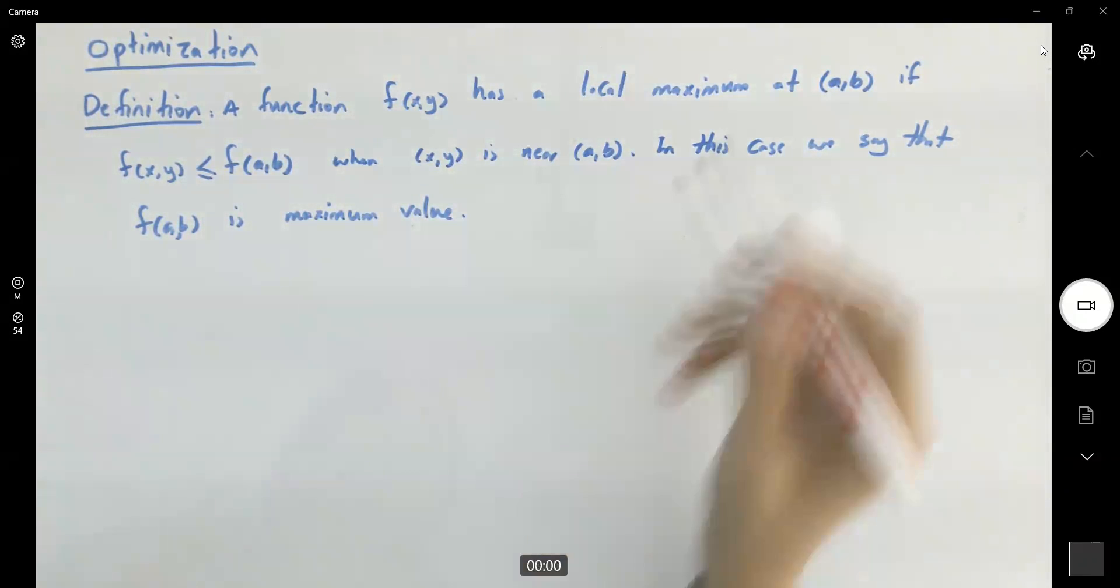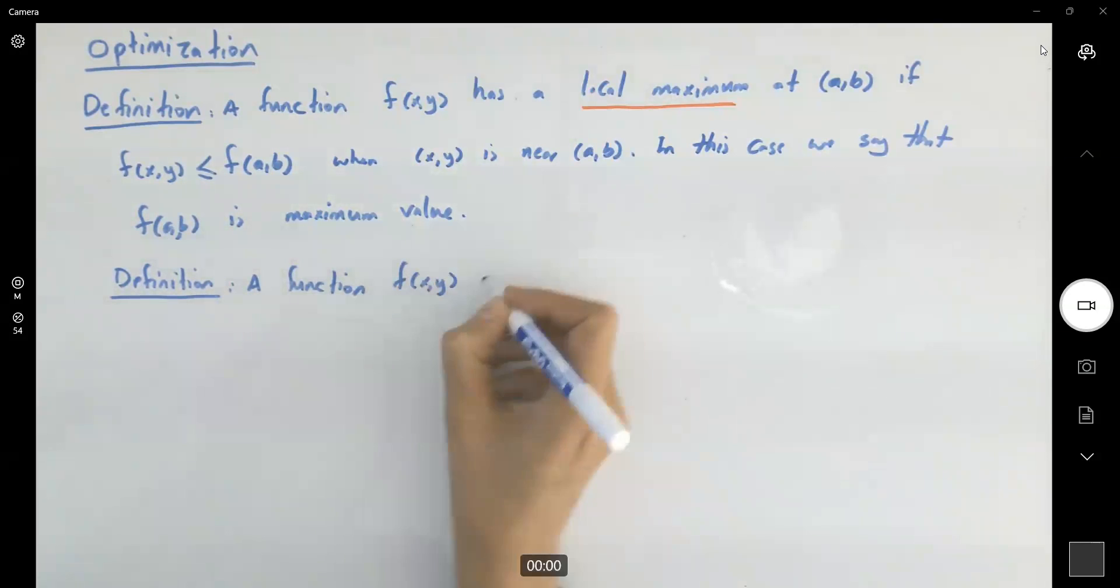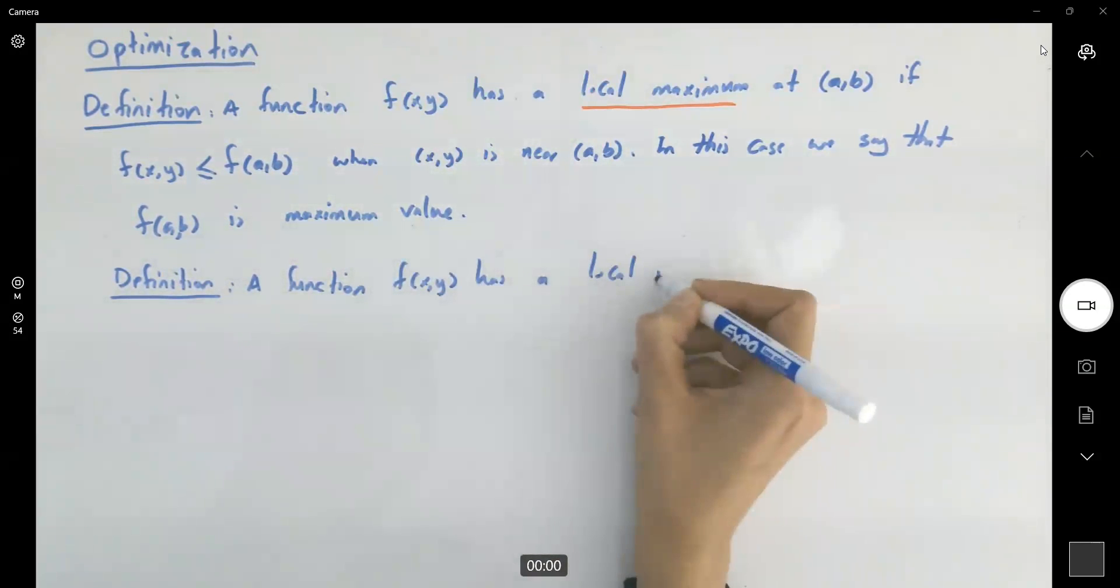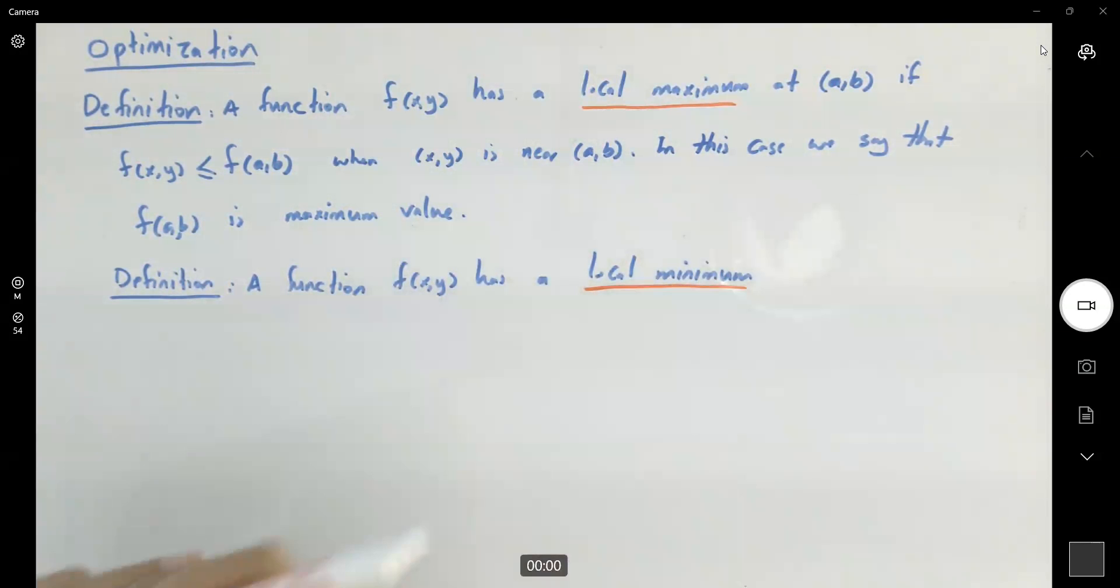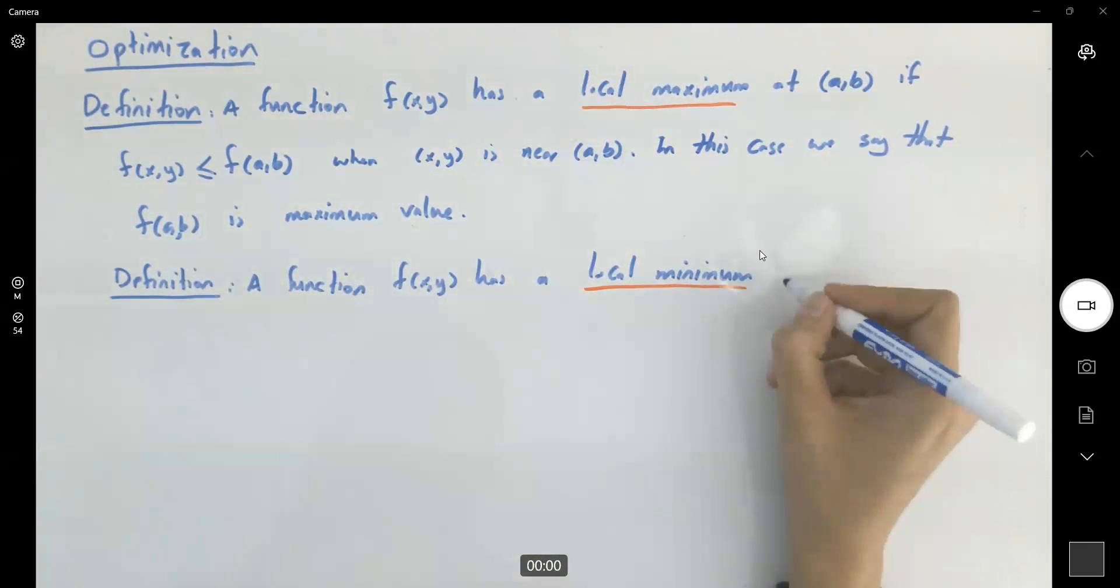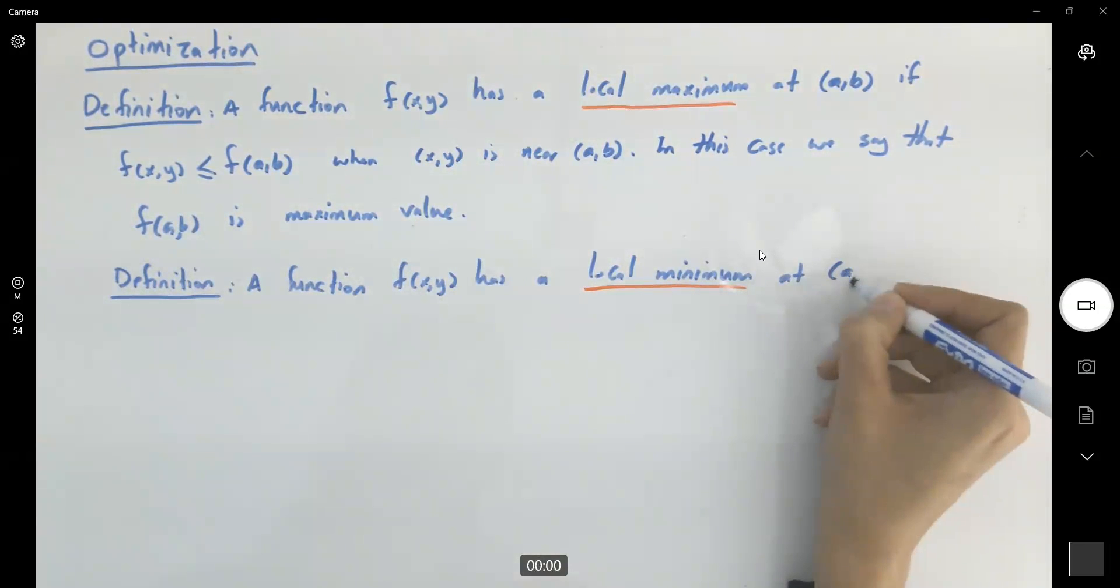Okay, we have a local maximum. It happens locally. We have a local minimum. Definition: a function f of x and y has the local minimum at a point at a and b, at a comma b.